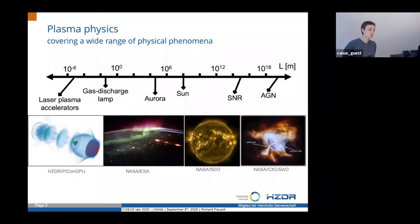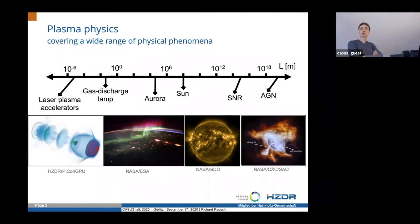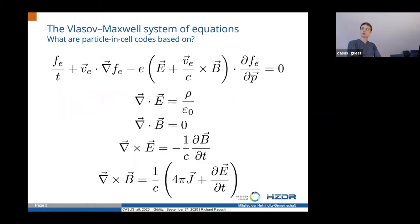So: basic introduction to plasma physics. Plasma physics covers a wide range of physical phenomena. On the one hand, you have micrometer and even nanometer scale laser-plasma accelerators — what we develop experimentally at HZDR and mainly simulate using PIConGPU. But plasma physics also plays a role on much larger scales, like the aurora on kilometer scales, or supernova remnants like the Crab Nebula on even larger spatial scales — and those have also been simulated using PIConGPU, as I'll show at the end of this talk.